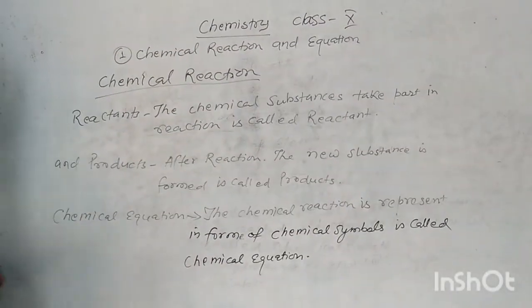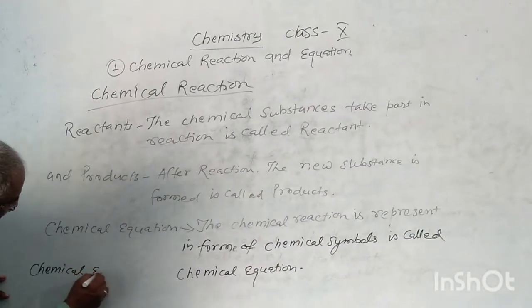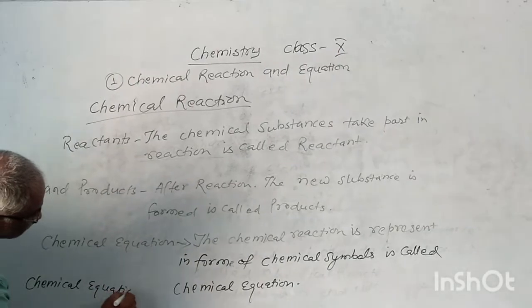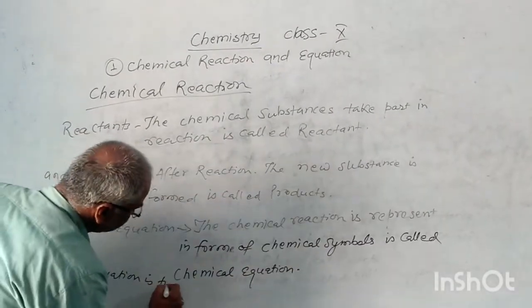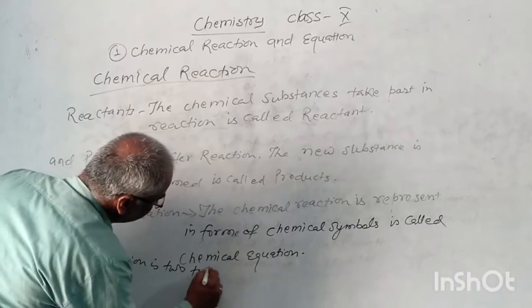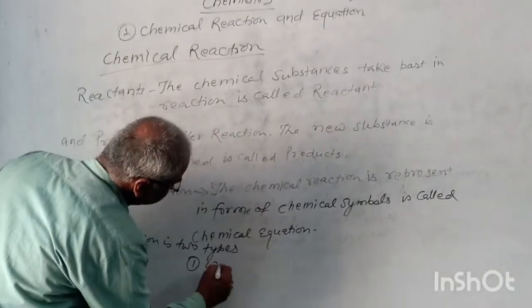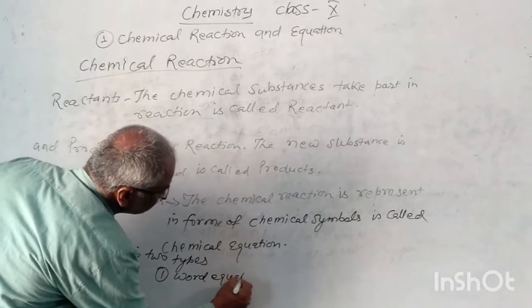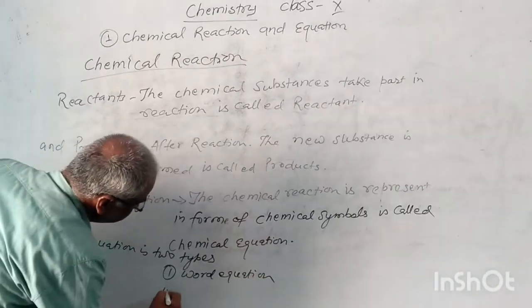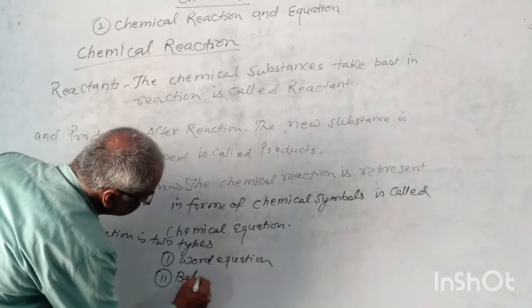Chemical equations are of two types: word equation and balanced equation.